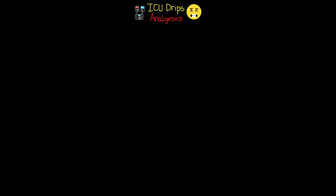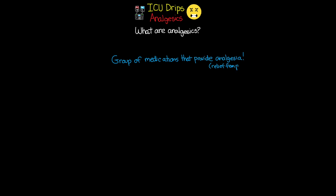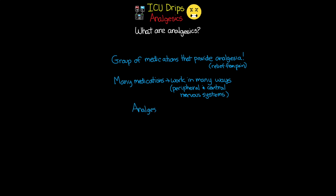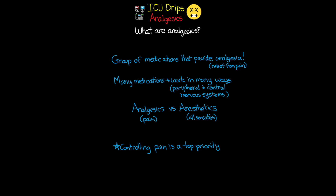Let's jump into our lesson and begin our talk about analgesics. What are analgesics? Essentially, analgesics are a group of medications that provide analgesia — relief from pain. Within this class there are many different drugs that work in different ways on the peripheral or central nervous system. It's important to distinguish that analgesics differ from anesthetics, which temporarily block all sensation, while analgesics only block pain sensation. Controlling patient pain is one of the top priorities in critical care, so we want to address pain before moving on to sedation medications.